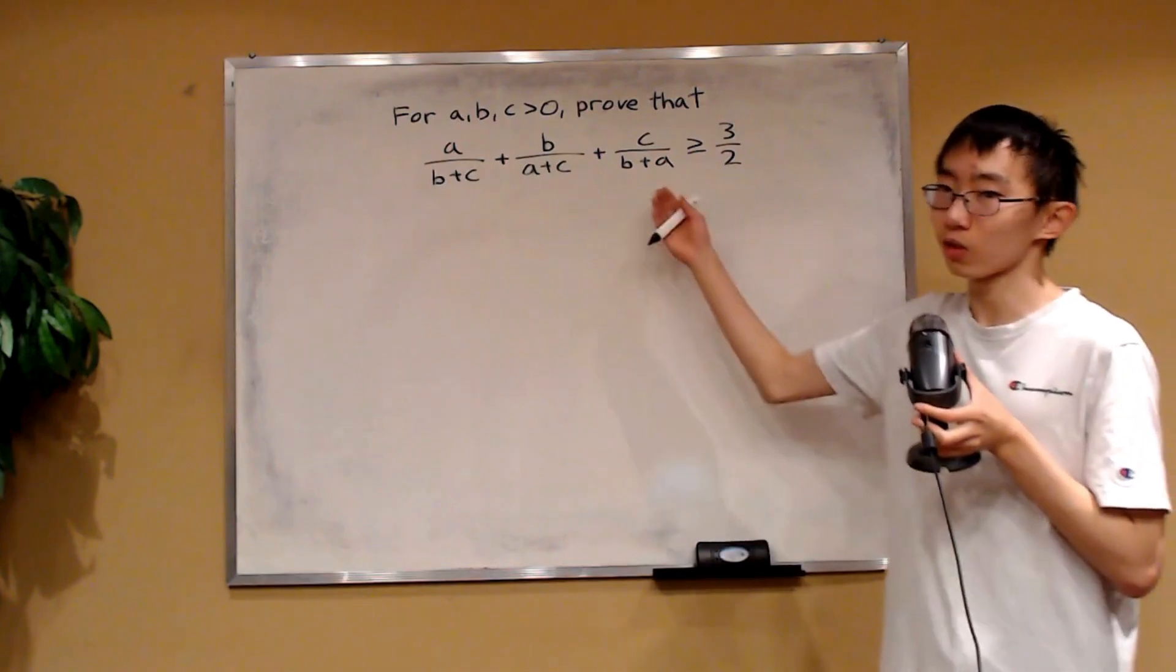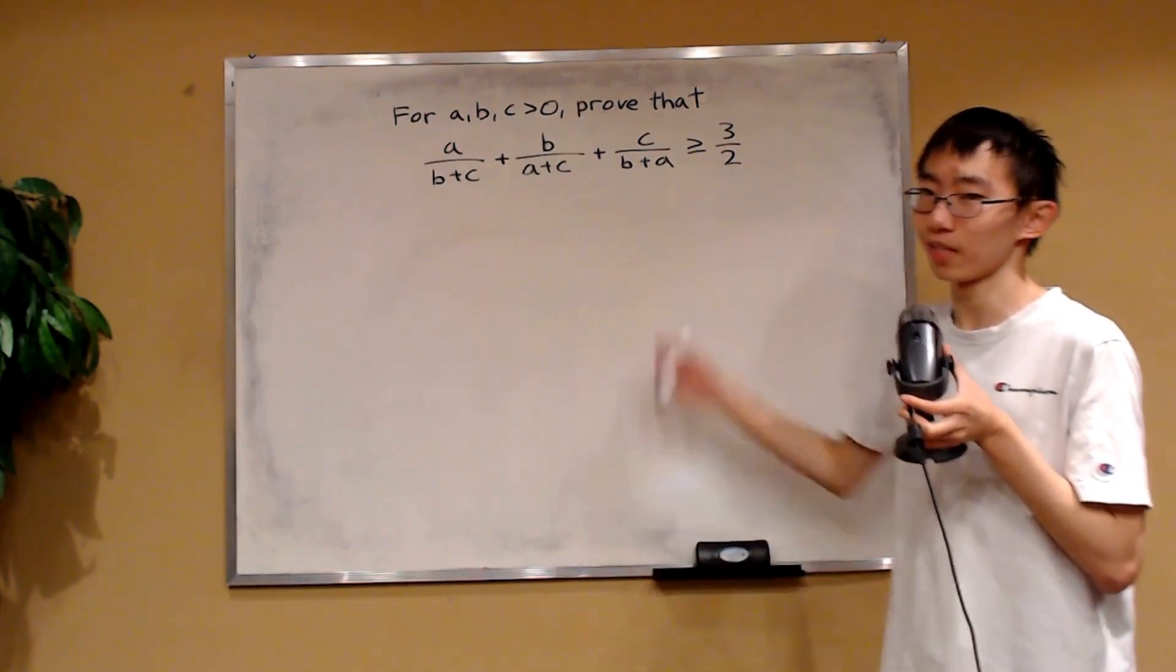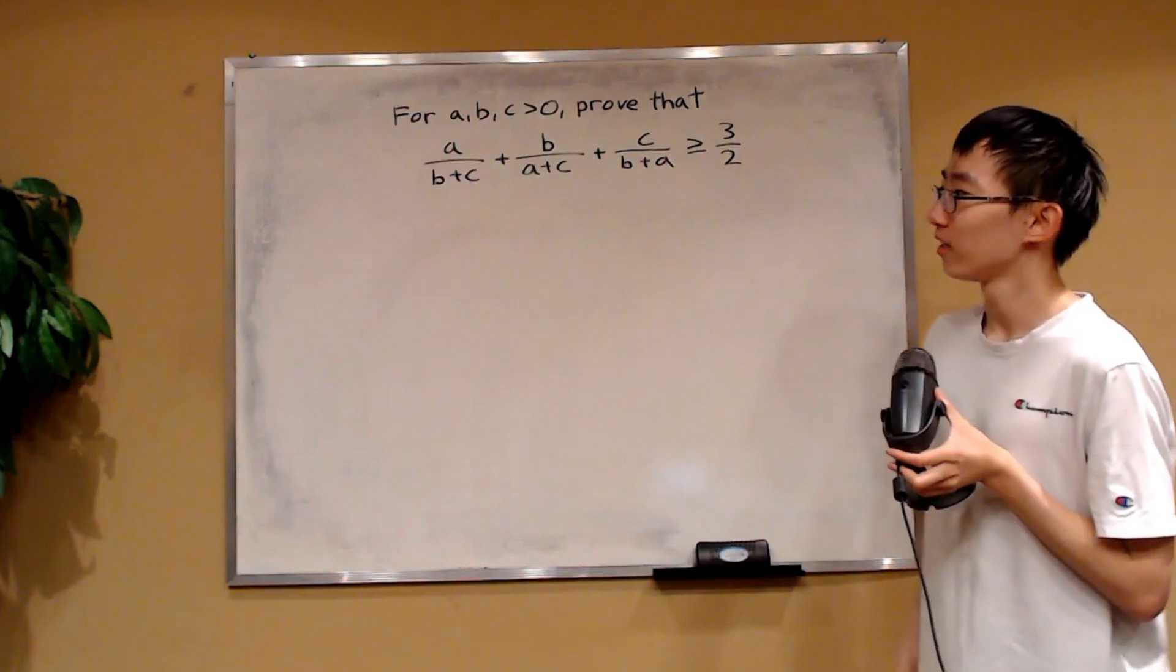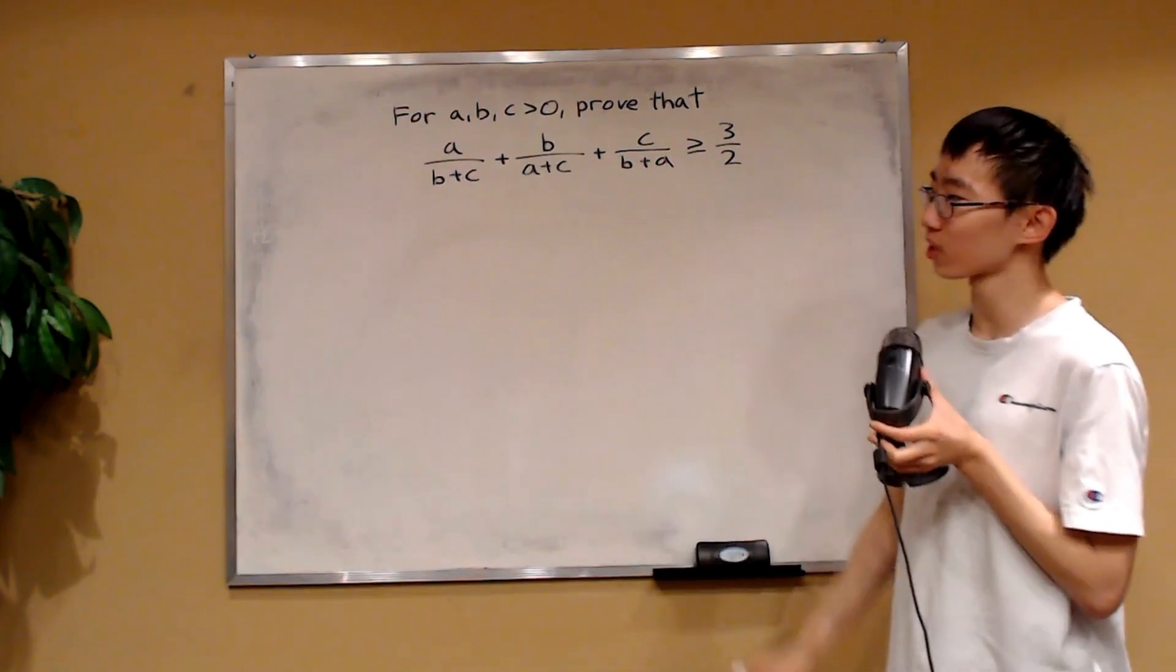This is called Nesbitt's inequality. There are many ways to prove this, but the point of this video is to show you how to use tangent line trick. So how can we use tangent line trick to solve this problem?